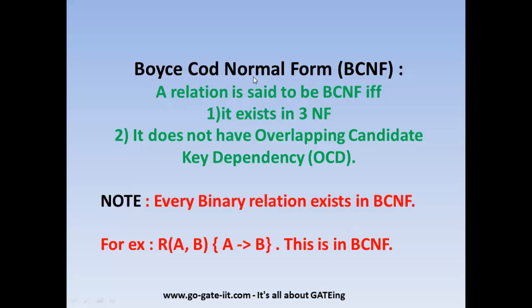A relation is said to be in BCNF if and only if it exists in 3NF and it does not have overlapping candidate key dependency. One important point to note is that every binary relation exists in BCNF. A binary relation is a relation with only 2 attributes. For example, relation R with attributes A and B having functional dependency A → B satisfies the BCNF definition, so every binary relation exists in BCNF by default.